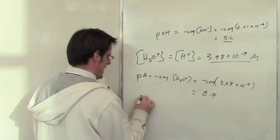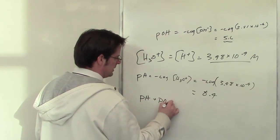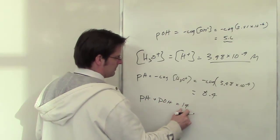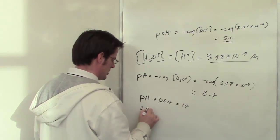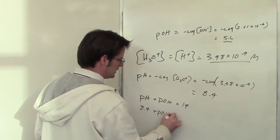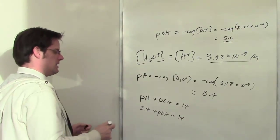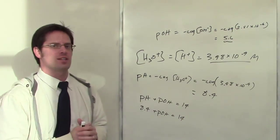We have to remember then that pH plus pOH is equal to 14. So I can throw 8.4 in for pH, and you'll discover that pOH, if you rearrange this algebraically, ends up equaling the same number we got before, 5.6.